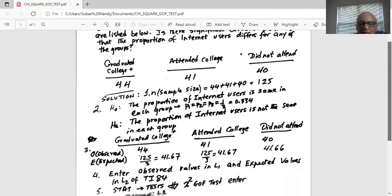So we have the three categories, graduated college, attended college, and did not attend college. We have the observed counts 44, 41, and 40. Now we have to calculate the expected counts. If the proportion is same in all categories, so we take the total sample size of 125 and multiply it by 0.334 or 125 divided by 3, the expected count in each category will be 41.67, assuming the null hypothesis is true.